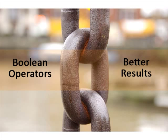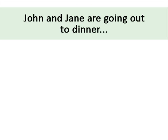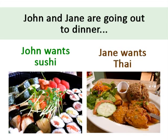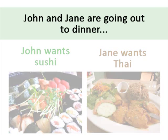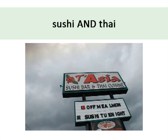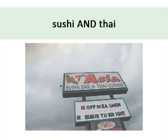Let's use a real-life example to make sense of this. John and Jane are going out to dinner, but they cannot seem to agree on where to go. John wants sushi, but Jane really wants Thai food. Luckily, they have options. If John and Jane go to a restaurant that serves sushi AND Thai, they can only go to a restaurant that serves both.